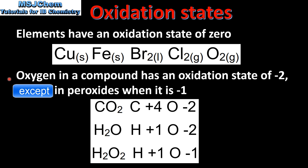Our next rule: oxygen in a compound has an oxidation state of negative 2, except in peroxides when it is negative 1. In carbon dioxide, the oxidation state of carbon is plus 4 and oxygen is negative 2. In water, hydrogen is plus 1 and oxygen is negative 2. In hydrogen peroxide, hydrogen is plus 1 but oxygen is negative 1.